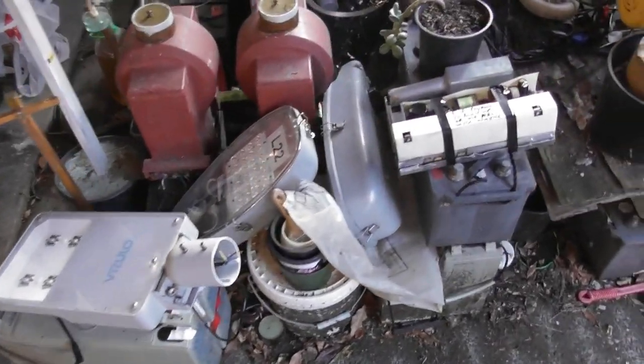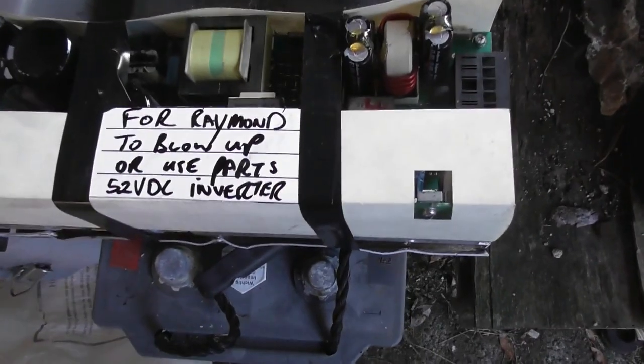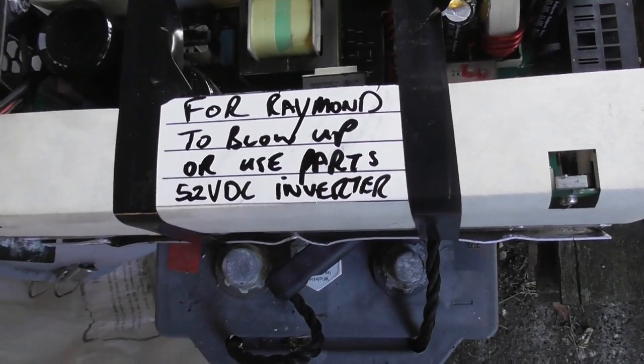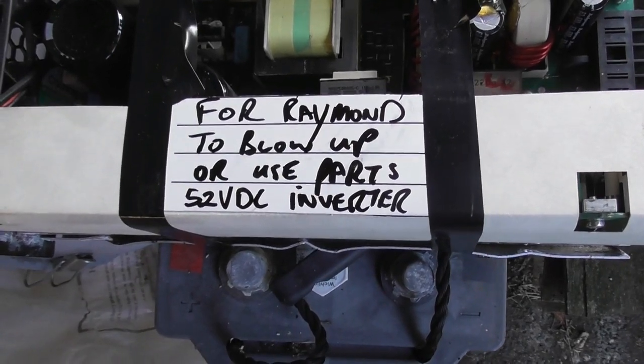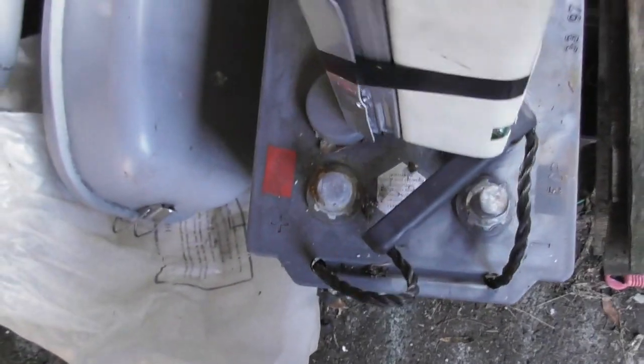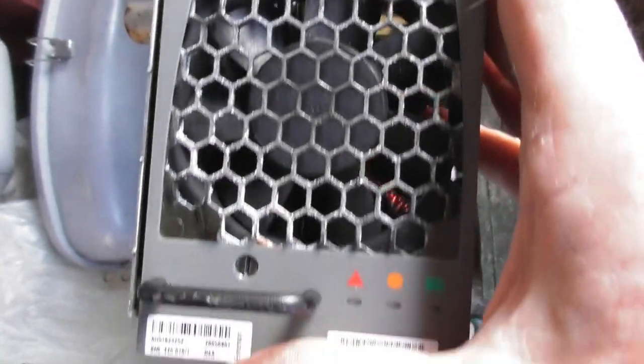Do you love it when you get this from your colleagues at work? For me to blow up or for parts, 52 volts DC inverter. Let's have a look at the device. I don't know where it comes from, substation charger somewhere. It's actually a 48 volt device, but yeah.